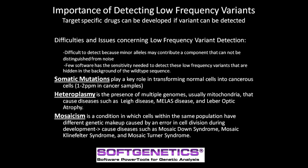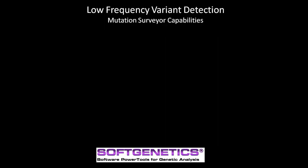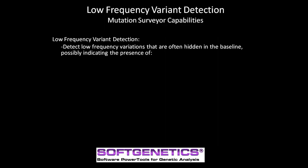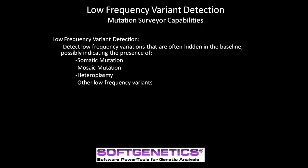In this case, Mutation Surveyor becomes an indispensable tool in assisting the researcher or clinician in detecting and indicating the possible variants from Sanger sequences. With Mutation Surveyor's high sensitivity, many of the low frequency variations hidden in the baseline can be detected. These variations can be an indication of somatic mutation, mosaic mutation, heteroplasmy, or other low frequency variants.